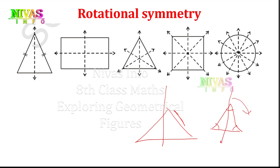If we rotate again, we are back to the base position. In the beginning we have a shape, and after rotation we return to the same position. Then we have rotational symmetry. For a rectangle, we rotate 180 degrees and it looks the same.